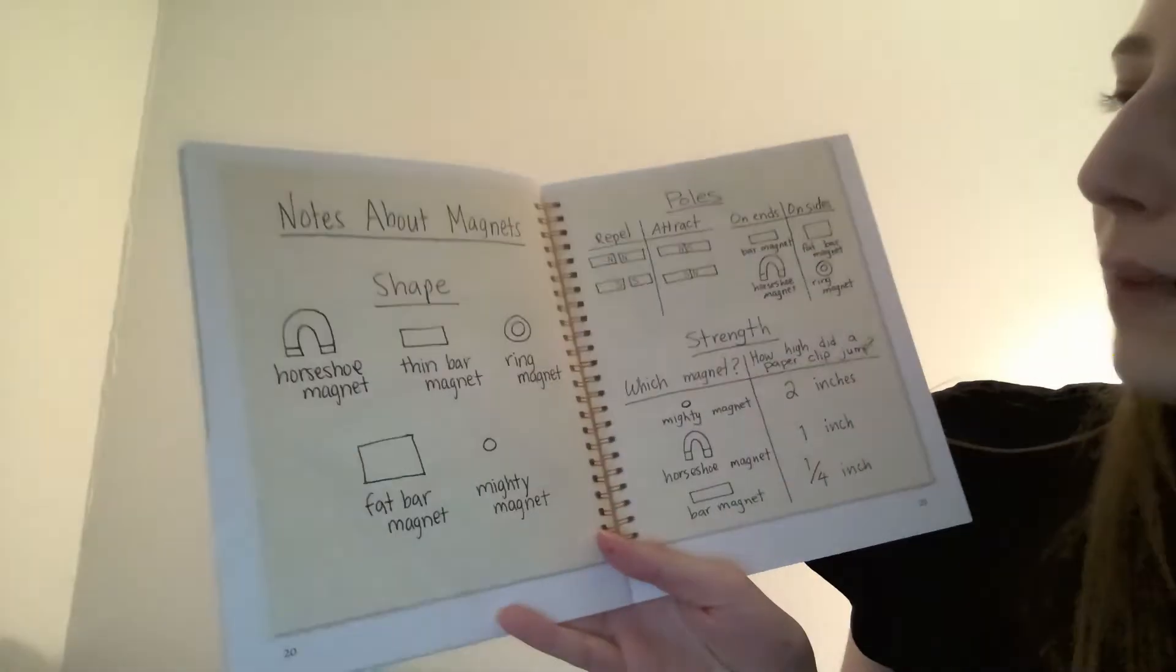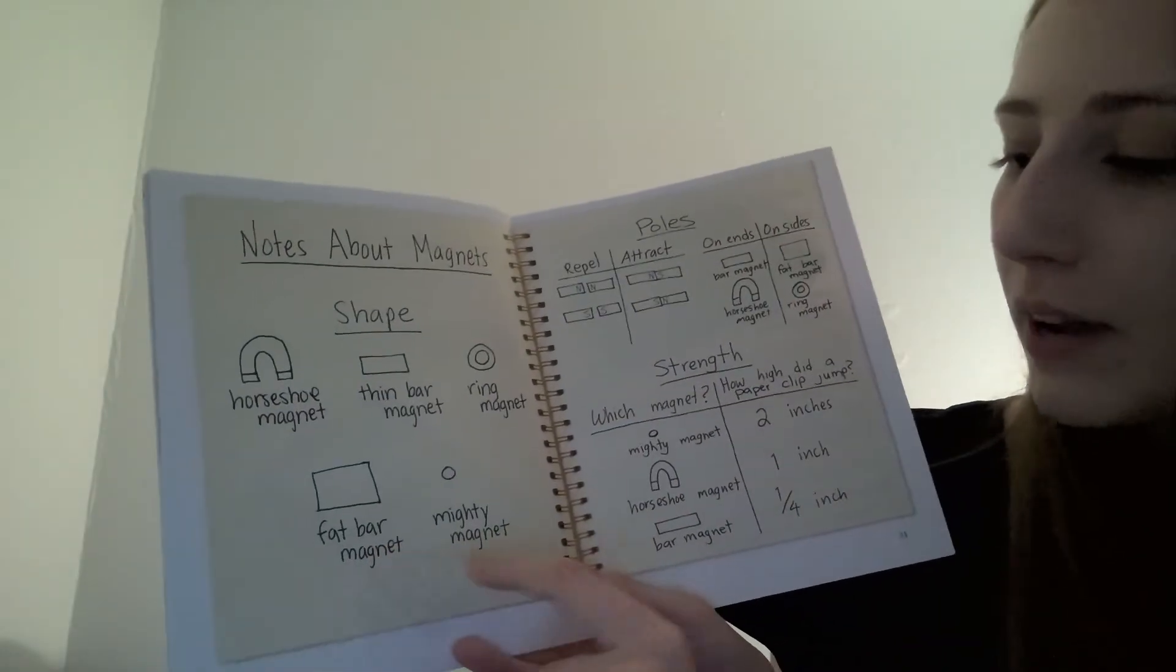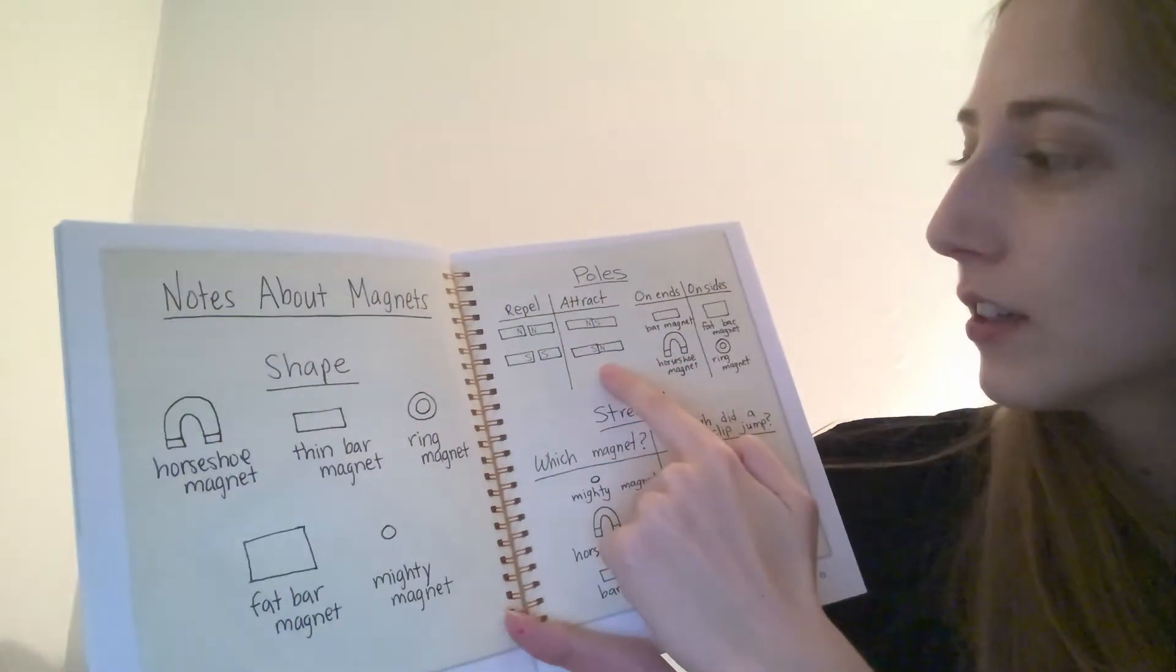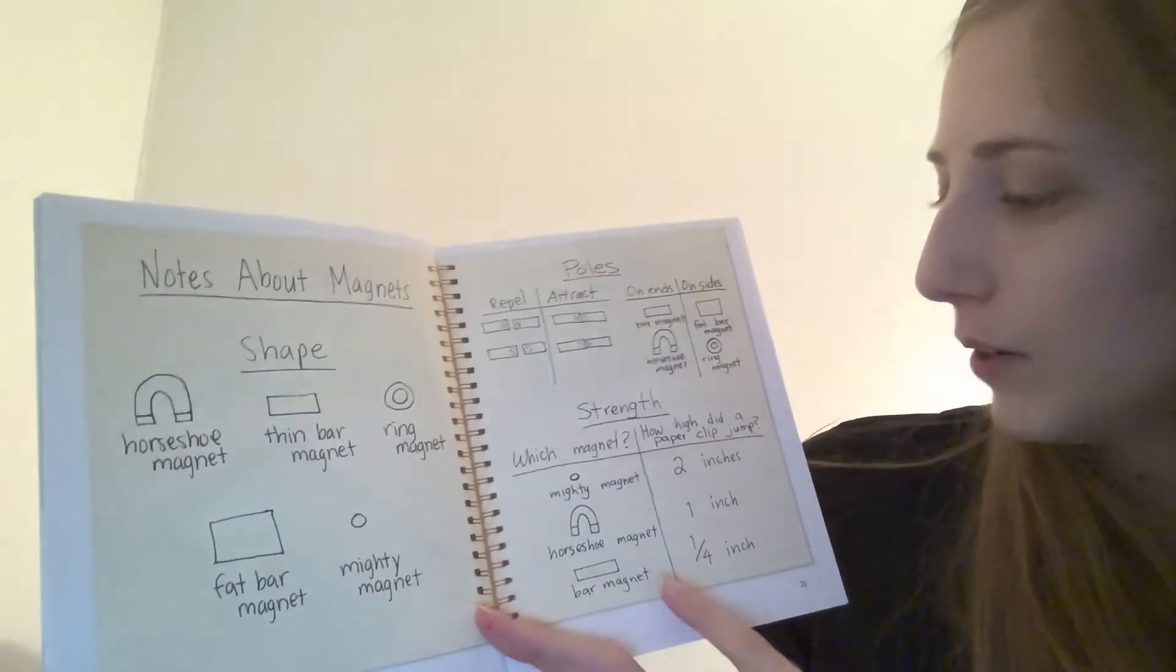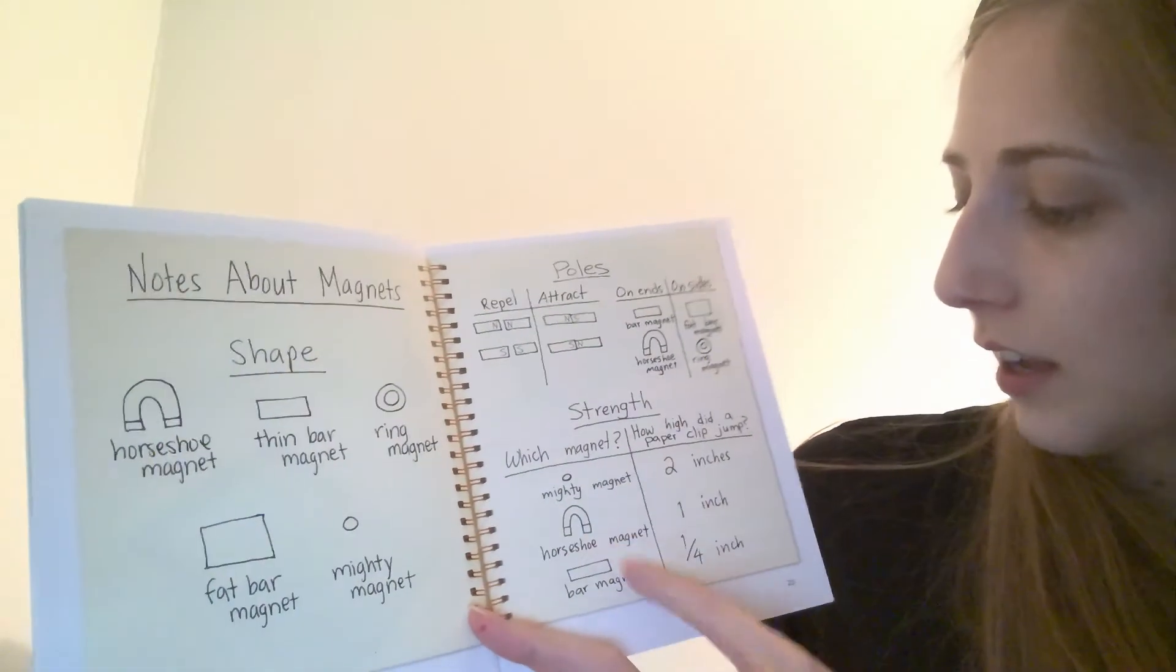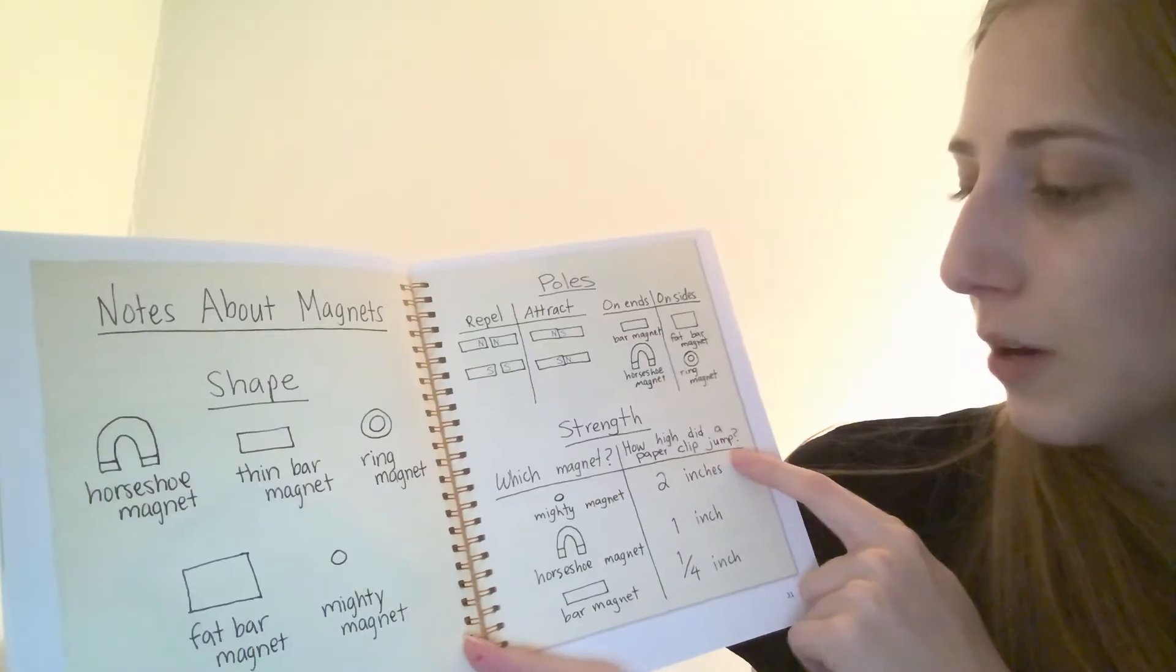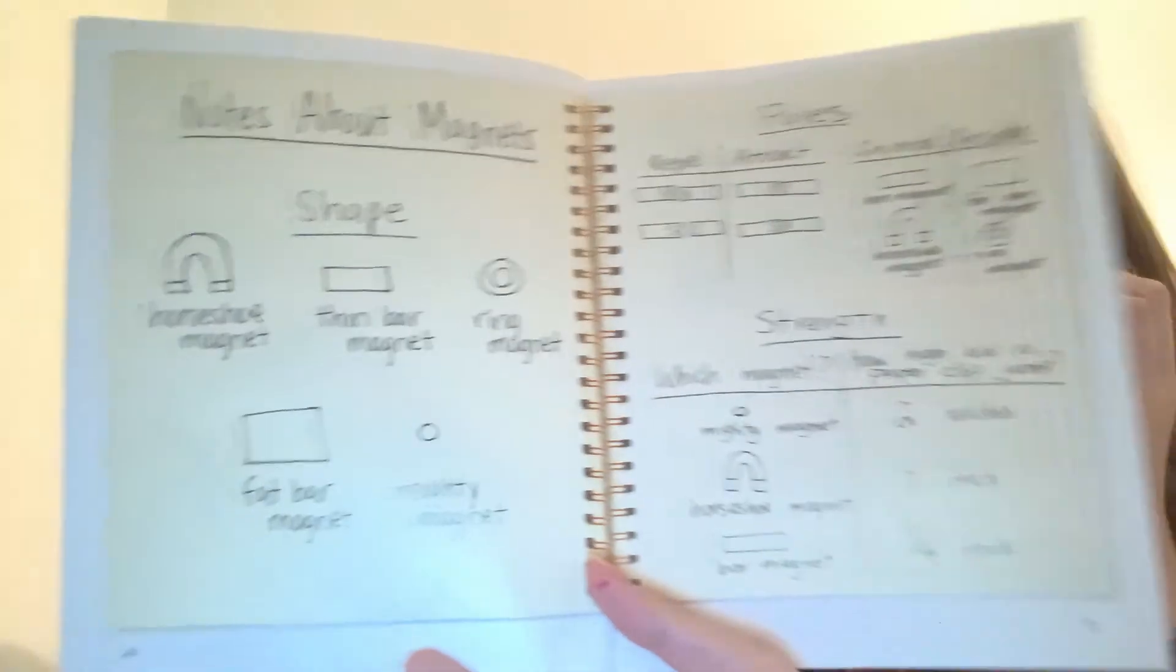Notes about magnets. The shape, a horseshoe magnet, a thin bar magnet, ring magnet, fat bar magnet, and a mighty magnet. The poles repel and attract on ends and on sides. And the strength, which magnet has different magnets, and how high did a paperclip jump? So the mighty magnet was two inches, the horseshoe magnet was one inch, and the bar magnet was one-fourth inch.